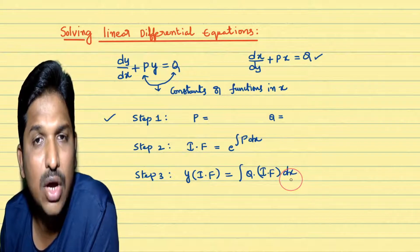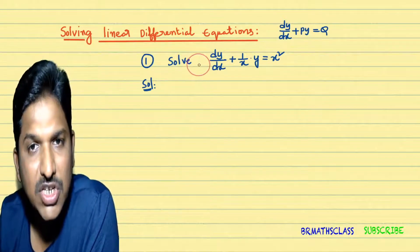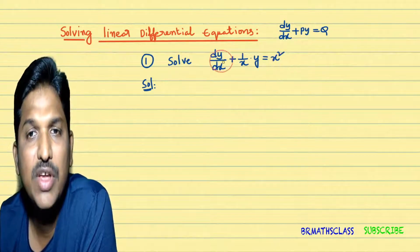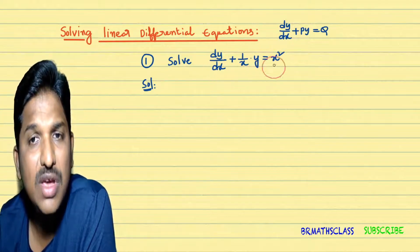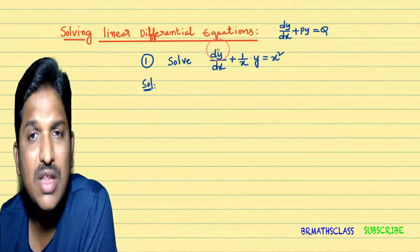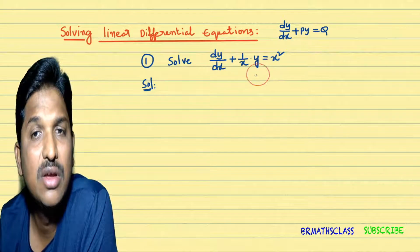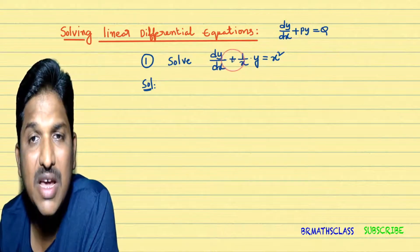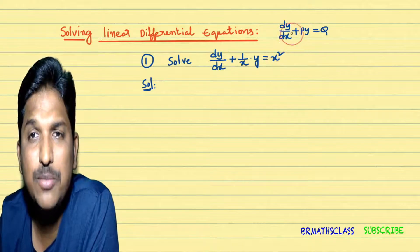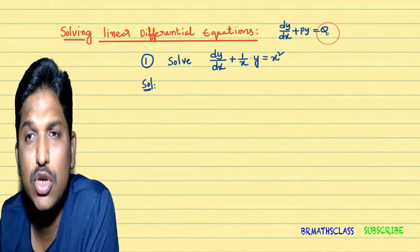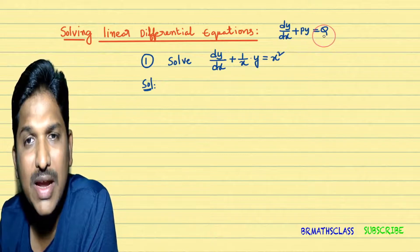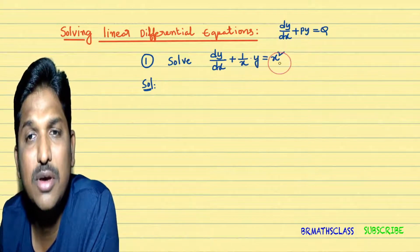Now in this class we will solve two linear differential equations. First problem: solve the differential equation dy by dx plus 1 by x into y equal to x squared. We need to identify that it is a linear differential equation of the form dy by dx plus py equal to q. You can easily identify that this problem is of that form, where p and q will be in terms of x or constants.